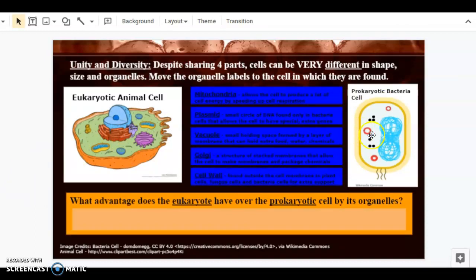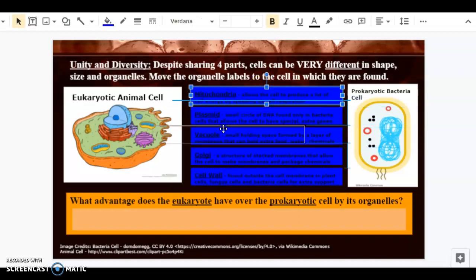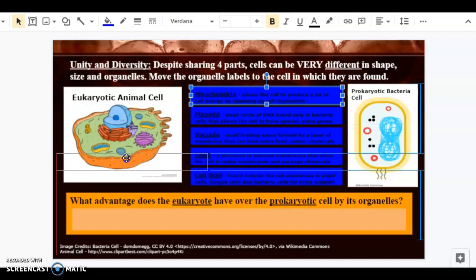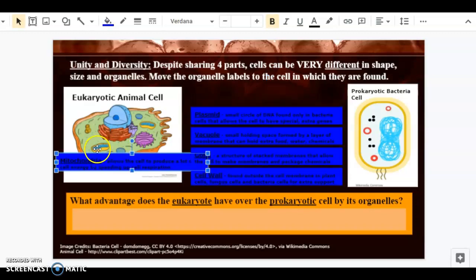We have the same two cells, but this time we're going to look at their differences instead of the things that unify them. We're going to start with the mitochondria, which we saw on a previous slide. The mitochondria allows the cell to produce a lot of energy by speeding up a process called cell respiration. We want to move this label to the cell in which it is found. The mitochondria on this cell is this small bean-shaped organelle.